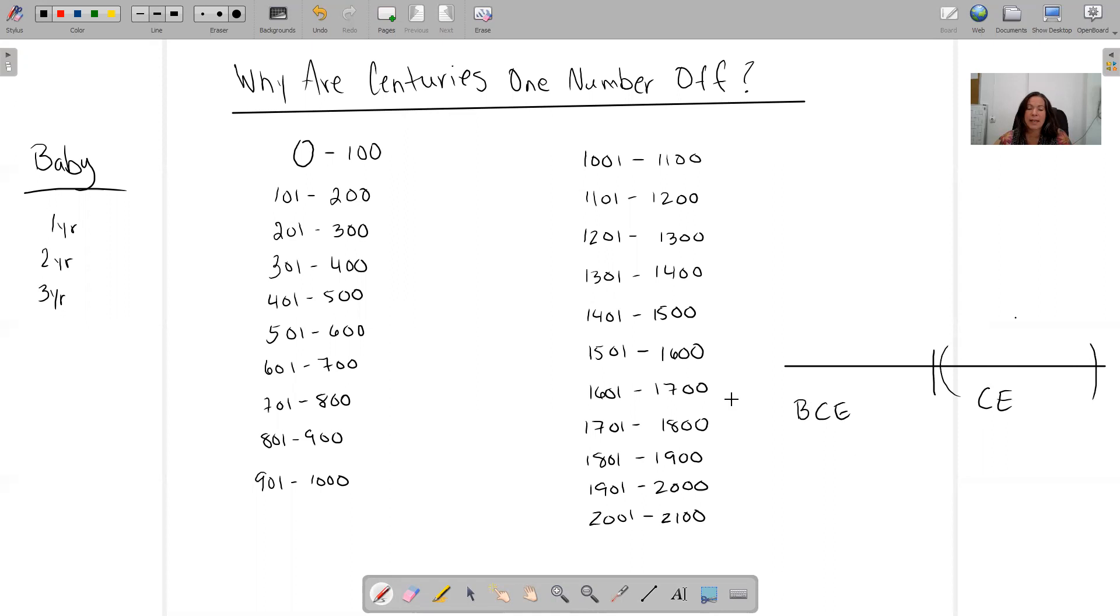So we're talking about these centuries. There really isn't a year zero. There is no such thing as the year zero. It starts with one. I just put a zero on there so you can understand the numbers. We start with the year one, so one through 100.